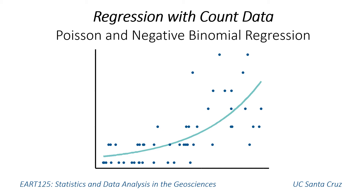Hi there and welcome to this video on Poisson regression and its relatives. Today I'll cover why you need to do a different type of regression if you have count data, talk about something called over dispersion and how to choose a method that can deal with it, and provide some options to deal with too many or not enough zero values.